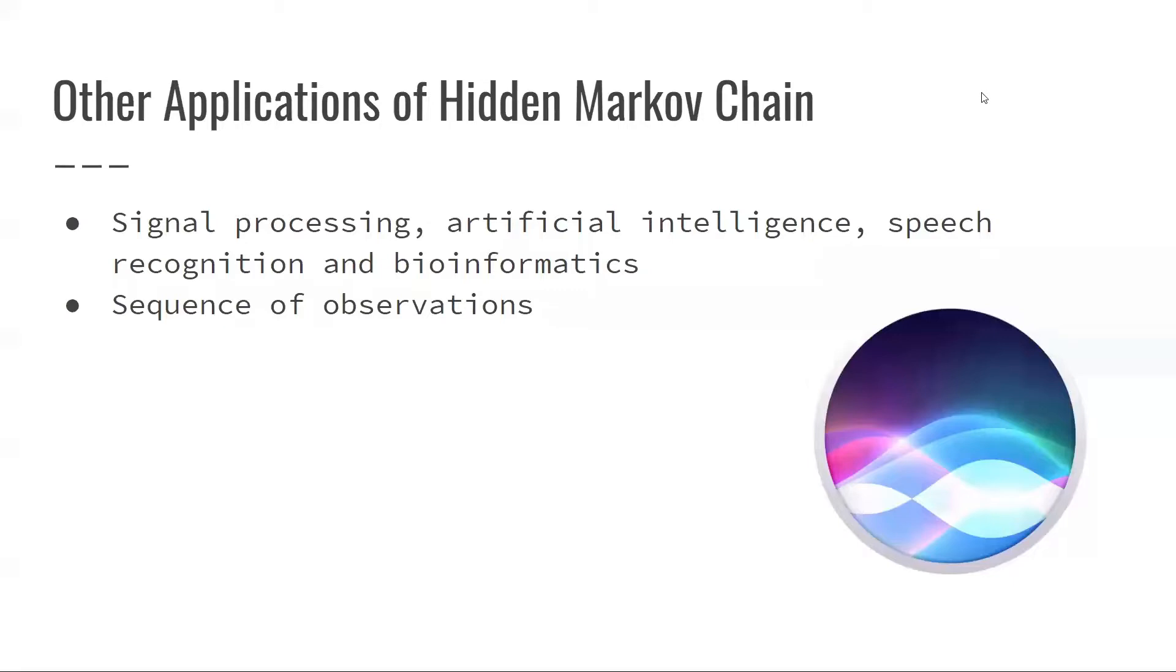Some other applications of the hidden Markov chains include things such as signal processing, which is processing images and stuff like that, and artificial intelligence, which is everywhere in our technology right now, speech recognition and bioinformatics, like we discussed before. And it generally applies to everything that has a sequence of observations. A very prominent example of this is Siri and Alexa, which are on all our phones and recognize what we're saying.